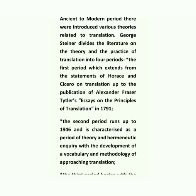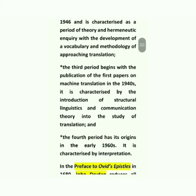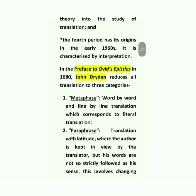The first period extends from the statements of Horace and Cicero on translation up to Alexander Fraser Tytler. The second period runs up to 1946 and is characterized as a period of theory and hermeneutic inquiry with the development of a vocabulary and methodology of approaching translation. The third period begins with the publication of the first papers on machine translation in the 1940s, characterized by the introduction of structural linguistics and communication theory into the study of translation. The fourth period has its origin in the early 1960s and is characterized by interpretation.